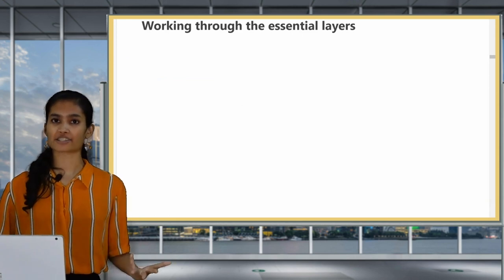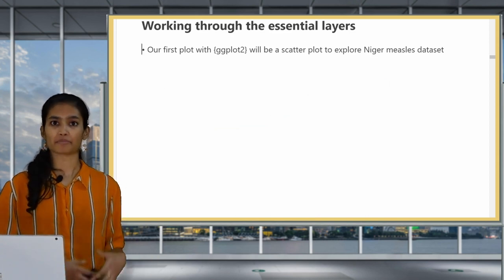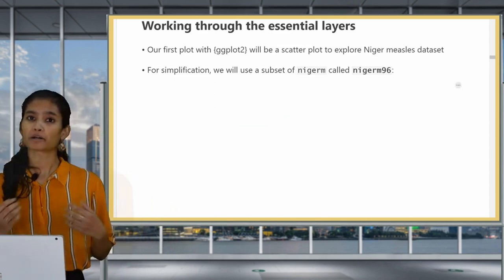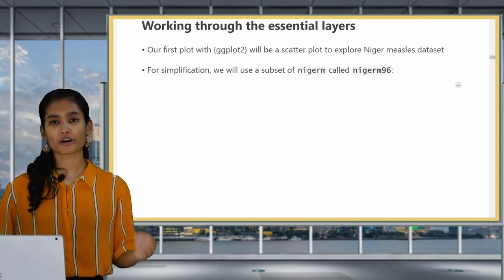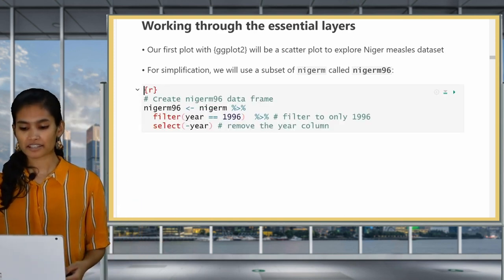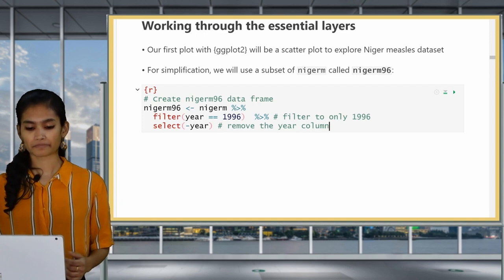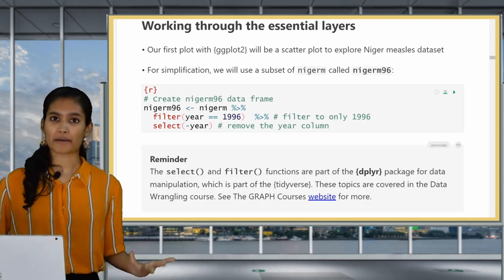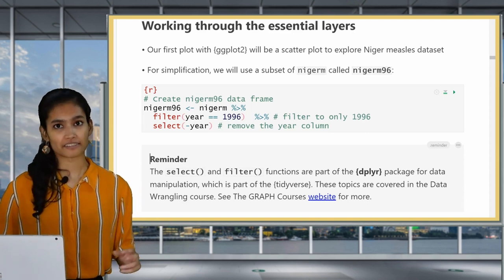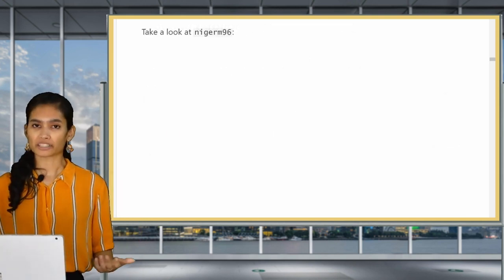Speaking of writing code, let's get to it. We're going to work through the three essential layers one at a time. Our first plot is going to be a scatter plot using data from the Niger measles dataset. For easier plotting in this lesson, we won't use the whole Niger M data frame, but we'll subset it to a smaller data frame containing only the data from 1996. So let's create the Niger M96 data frame. If you run this code, it will filter the data to only 1996 and remove the year column. The functions filter and select are from the dplyr package, which is another core package of the tidyverse used for data manipulation.